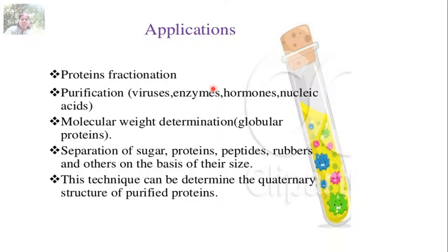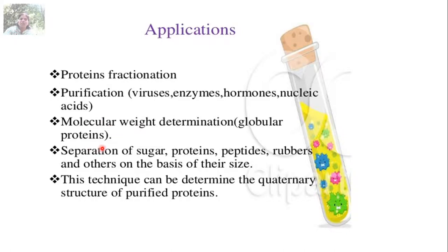What are the applications of gel filtration chromatography? It is applied for protein fractionation, purification of viruses, enzymes, hormones, and nucleic acids, and it is also used for determination of the molecular weight of globular proteins. Molecular weight is determined by plotting the collected fractions versus molecular weight using a marker. This technique can also separate sugar proteins, peptides, and others on the basis of their size, and can determine the quaternary structure of purified proteins.